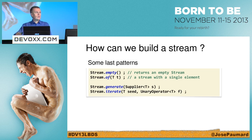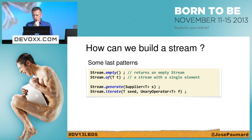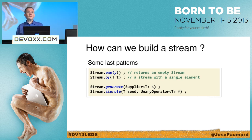I've got other patterns: Stream.empty(), which returns an empty stream; a stream with a single element; Stream.generate(), which takes a lambda expression that is a Supplier — a Supplier doesn't take any parameters and returns a new object. And I can iterate by passing a seed and a UnaryOperator — a UnaryOperator is a special type of function that takes an object and returns an object of the same type.